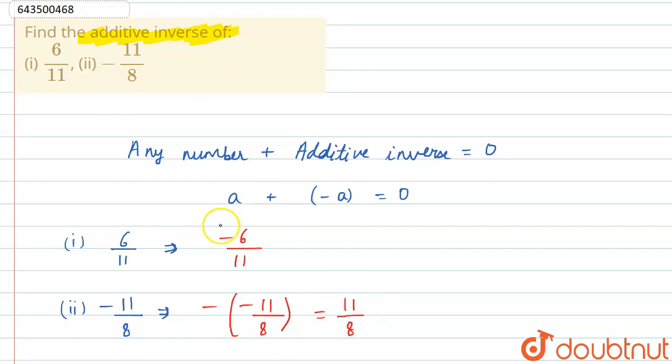So the additive inverse of 6 by 11 is minus 6 by 11 and that of minus 11 by 8 is 11 by 8. Thank you.